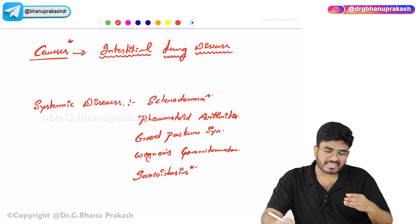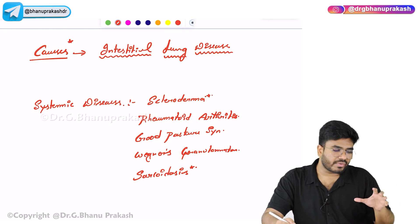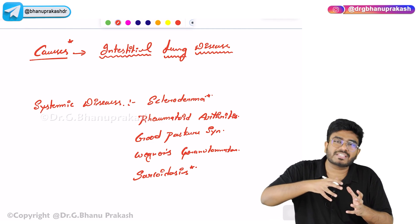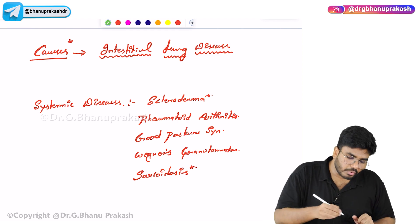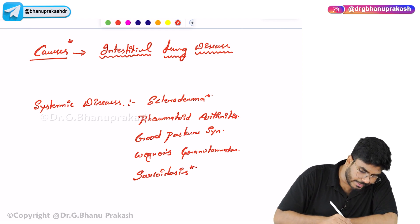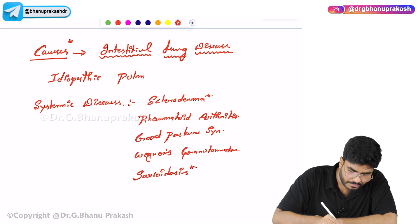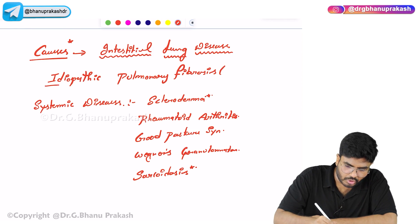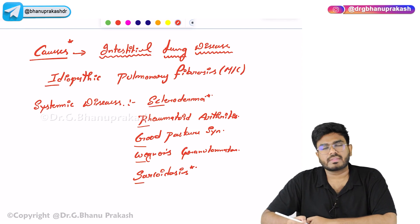Fibrotic lungs don't have enough compliance — the compliance goes down, making it very hard to expand the lungs. So it is an inspiratory problem. In all these conditions the main problem is fibrosis. The most common cause of interstitial lung disease is not the systemic diseases — it is idiopathic. Idiopathic pulmonary fibrosis is the most common cause. In scleroderma and other systemic conditions the same thing happens and can also lead to restrictive lung diseases.